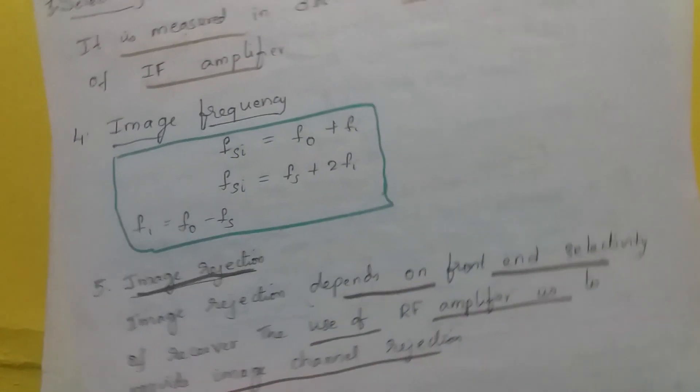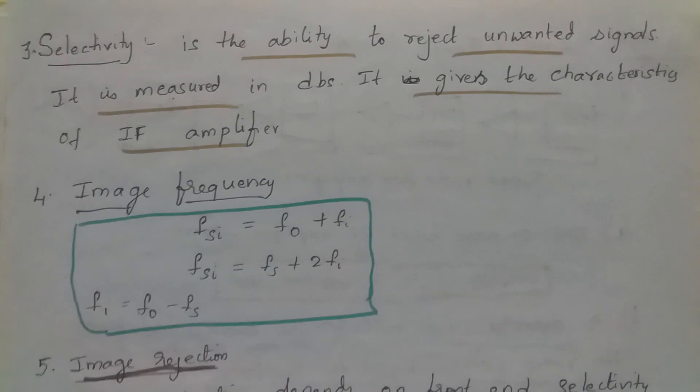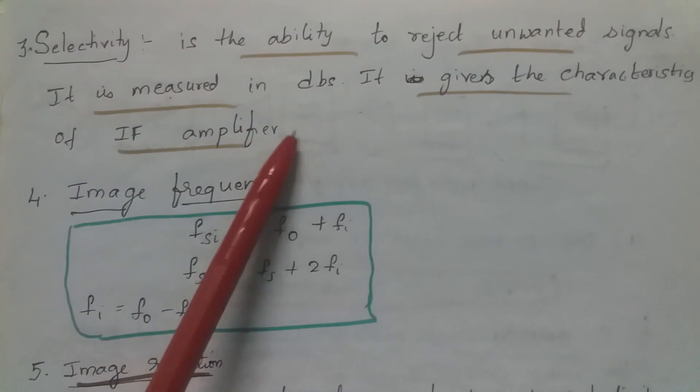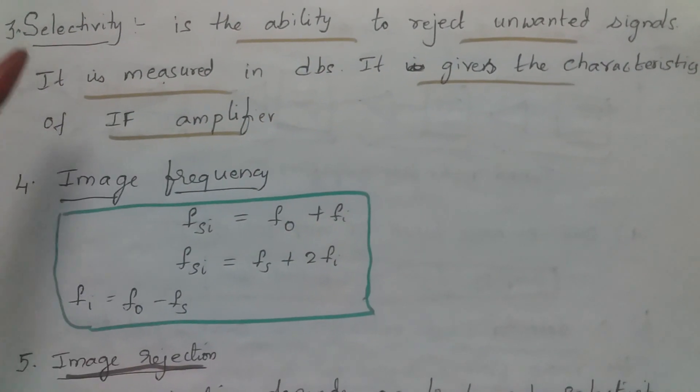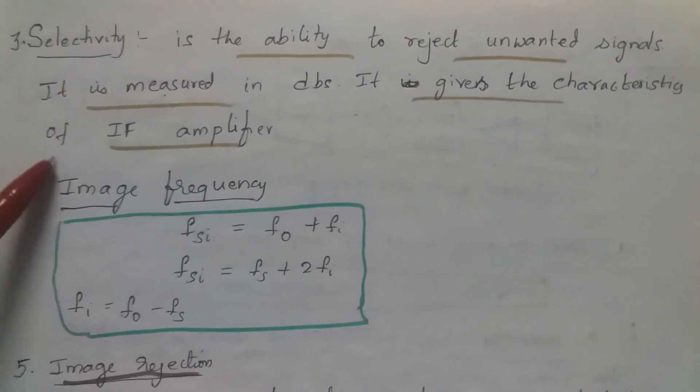Let us discuss the terminology, few terminologies related to receivers. Selectivity is the ability to reject unwanted signals. Selectivity is usually measured in dB. It gives the characteristic of IF amplifier.